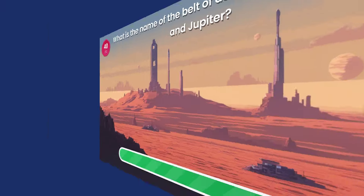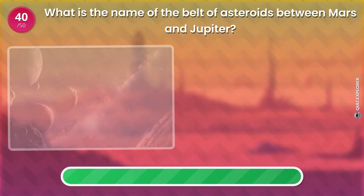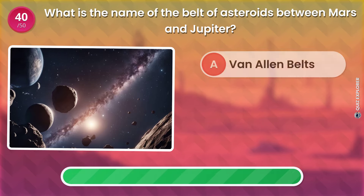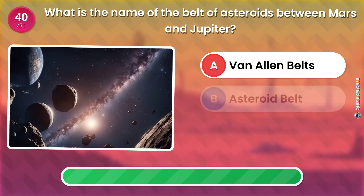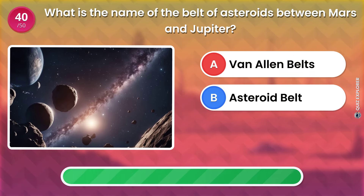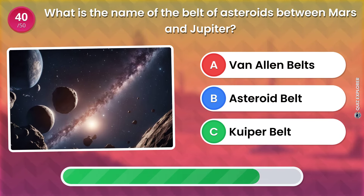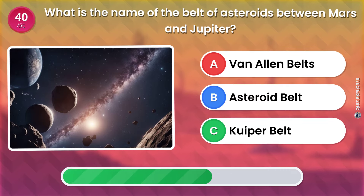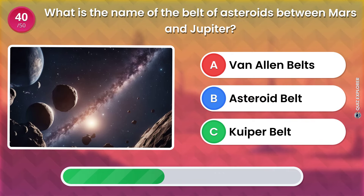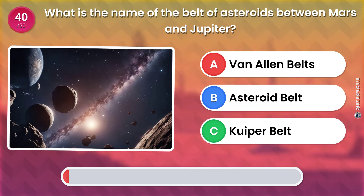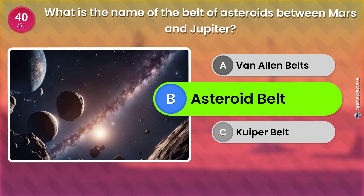What is the name of the belt of asteroids between Mars and Jupiter? Van Allen belts. Asteroid belt. Kuiper belt. The answer is: Asteroid belt.